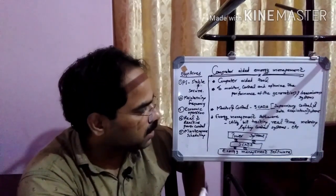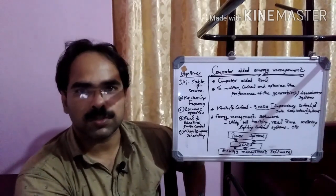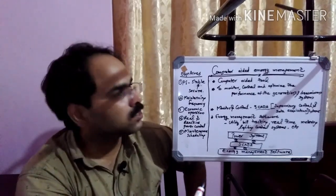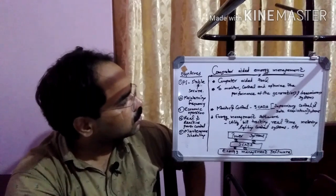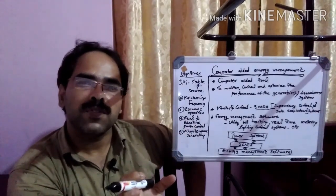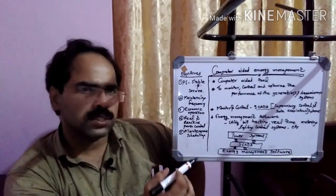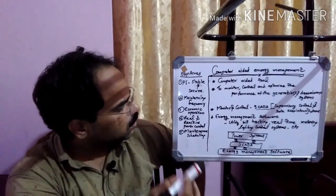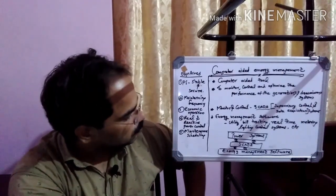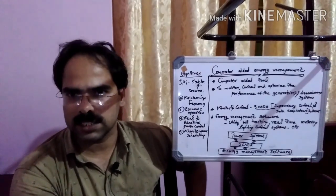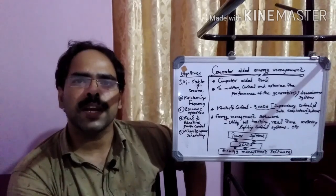There will be SCADA systems, there will be energy management softwares, and that we are connecting with power systems. With the help of these sections, we can manage the power systems. What are the objectives of computer-aided energy management systems? We can make the power system more stable and secure. Also, maintaining frequency — in order to set the frequency at a particular level — that is also what we can do. Most of the operations we can make more economic. Real-time and reactive power control we can do with the help of computer-aided energy management systems. In case of power systems, we need to go through maintenance sections — the proper scheduling we can do with the help of computer-aided energy management systems.